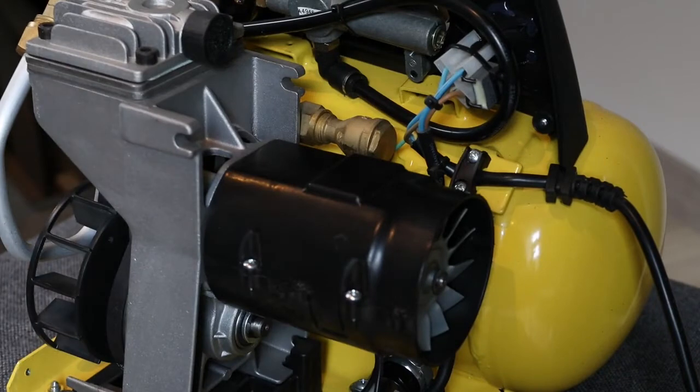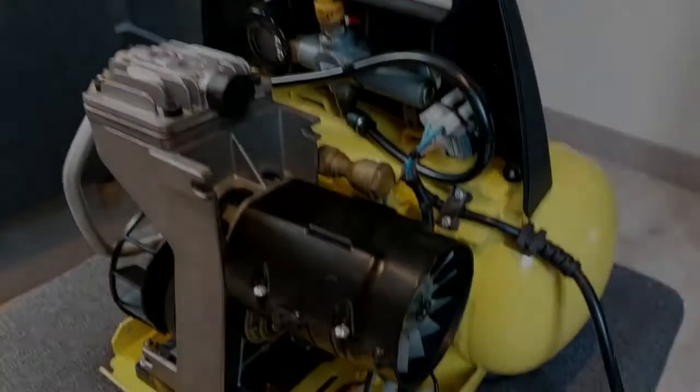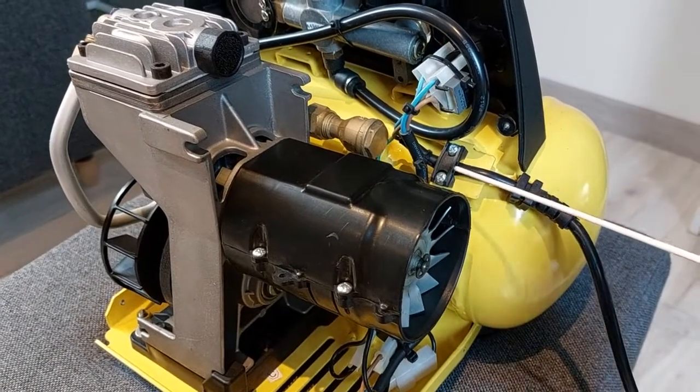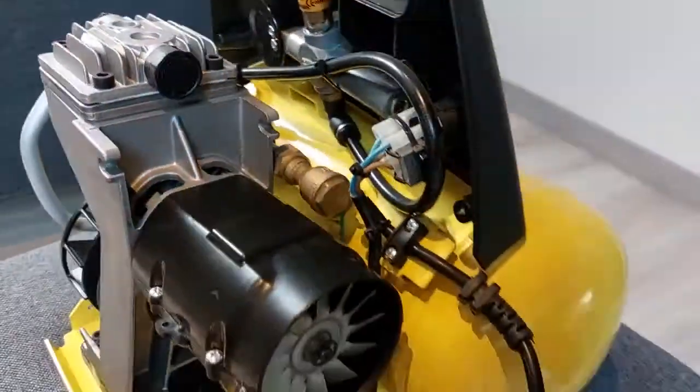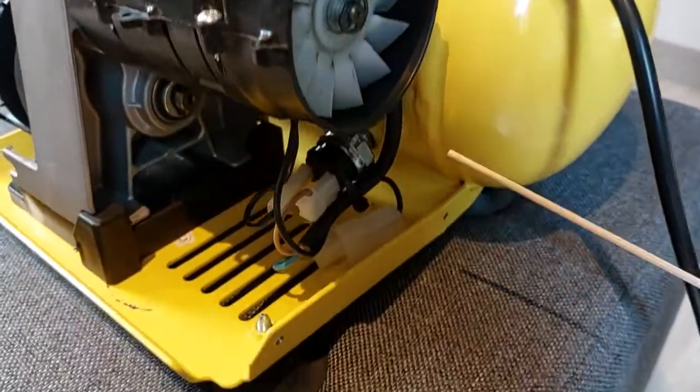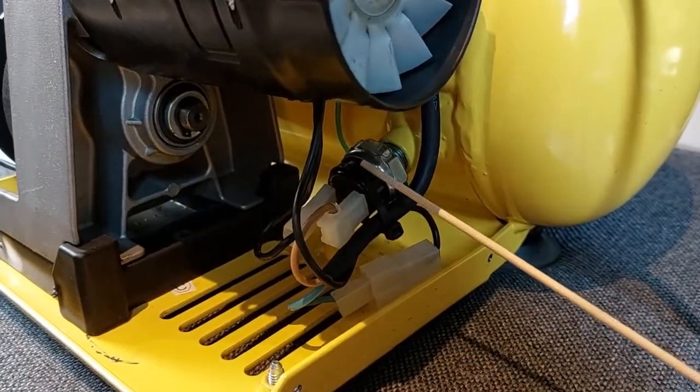First let's take a closer look at how the compressor actually works. The power cable runs to the connector of the power button. When the button is pressed the current flows to the pressure sensor. This is basically a switch for the motor.